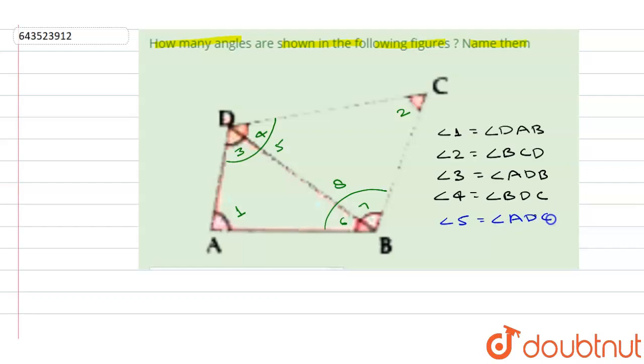Angle six is formed by the line AB and BD, so angle will be ABD.